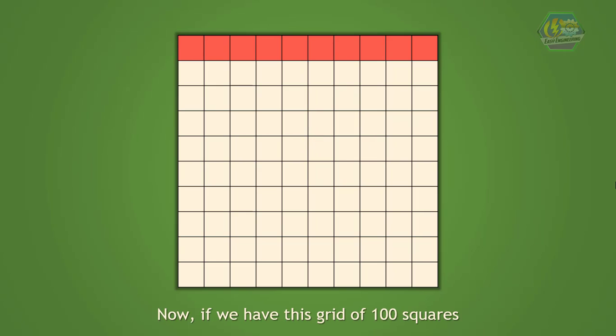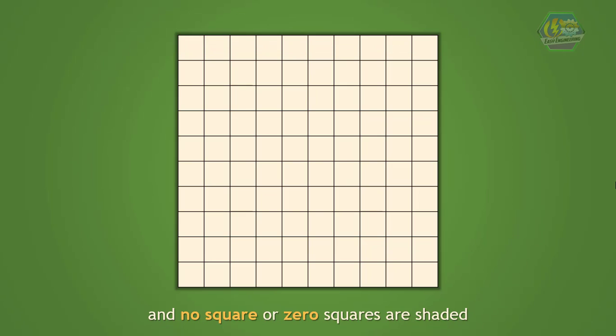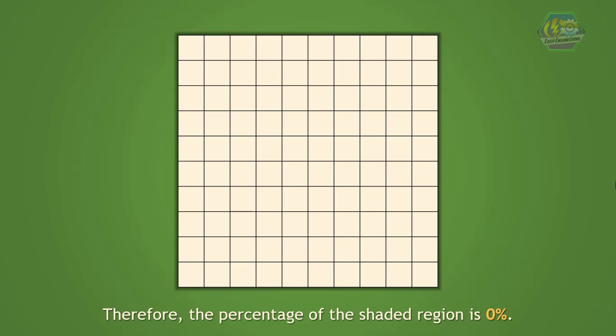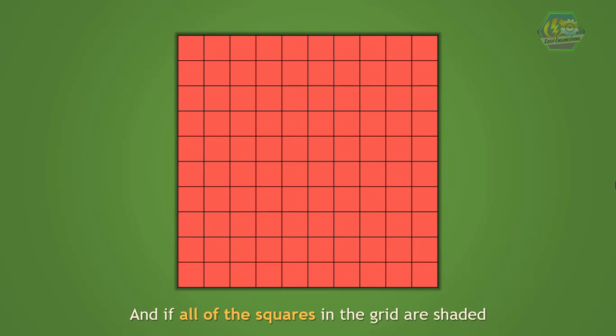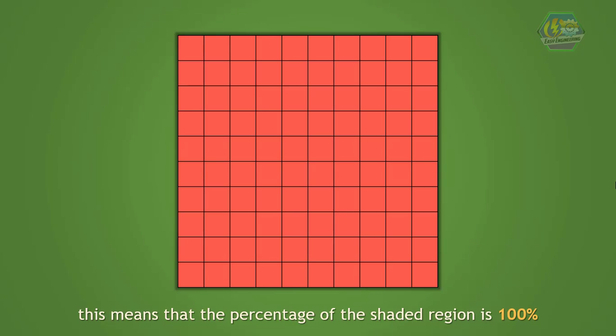If we have a grid with 100 squares and no squares — 0 squares — are shaded, then the percentage of the shaded region is 0 percent. And if all of the squares in the grid are shaded, this means that the percentage of the shaded region is 100 percent.